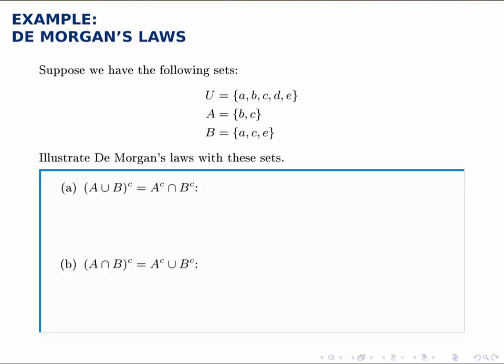In this example we're given a universal set U and then sets A and B within that universal set, and we're asked to illustrate De Morgan's laws with these sets.